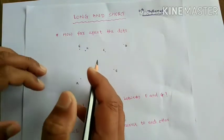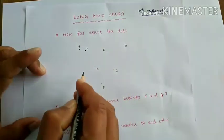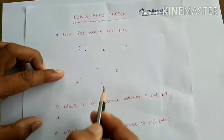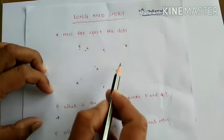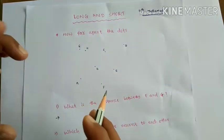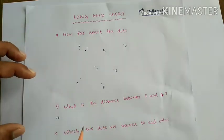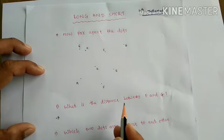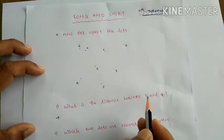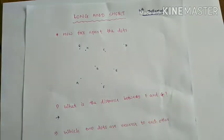In this first activity, we can see how far apart the dots are. Some dots are labeled A, B, C, D, E, F, G, H. These dots are drawn and we have to measure the distance between them. The first question is: what is the distance between F and G?